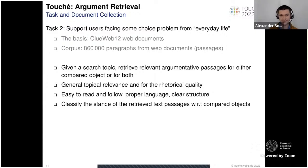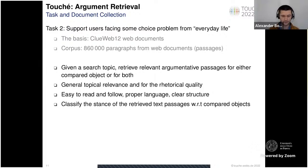As an additional optional task, we would be happy if you could also build a classifier that identifies the stance of retrieved text passages with respect to the compared objects.